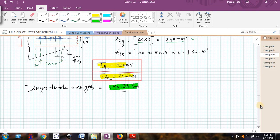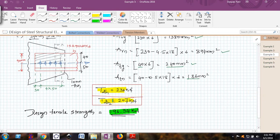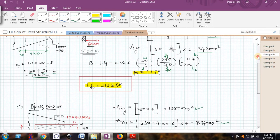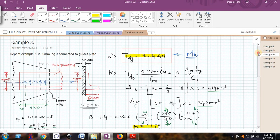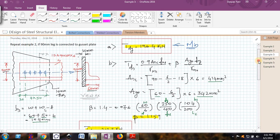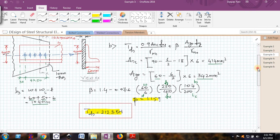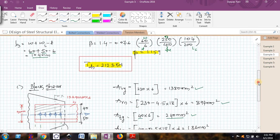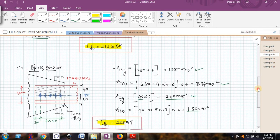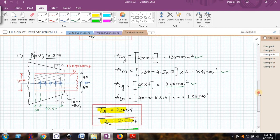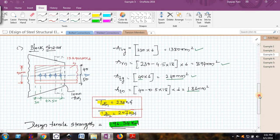Whenever you want to use an unequal angle, please see to it that you always connect the longer leg to the gusset plate and see to it that the shorter leg is an outstanding leg. By doing so, you will actually increase the design tensile strength of that angle. This is a very simple extension of example 2, which gives a very brief idea in unequal angles: which leg to be connected to the gusset plate and which leg should be an outstanding leg.